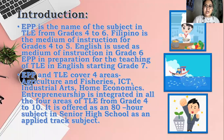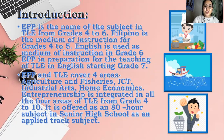EPP is the name of the subject in TLE from grades 4 to 6. Filipino is the medium of instruction for grades 4 to 5. English is used as medium of instruction in grade 6 EPP in preparation for the teaching of TLE in English starting grade 7. EPP and TLE cover four areas: agriculture and fisheries — for agriculture, it includes crop production and animal production; for fisheries, it includes aquatic activities; and ICT, or information and communication technology, involves learning about computers from basic up to the most advanced.